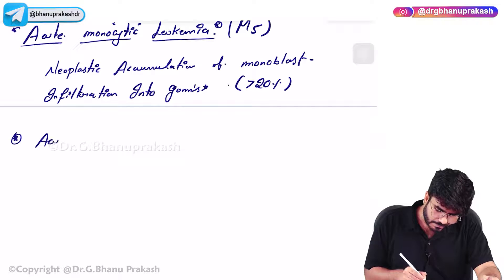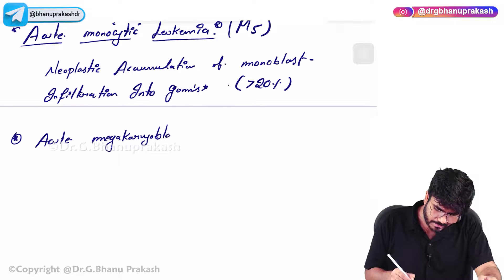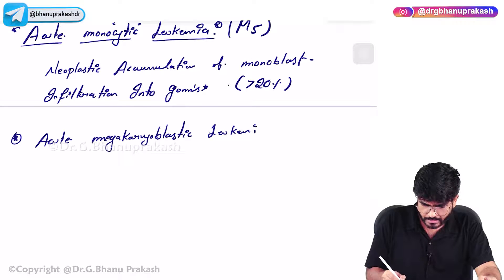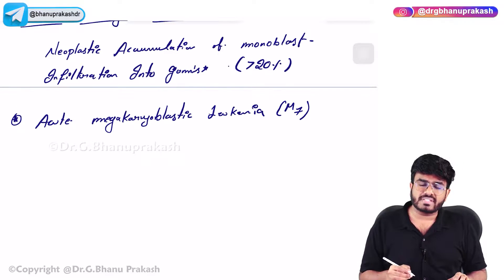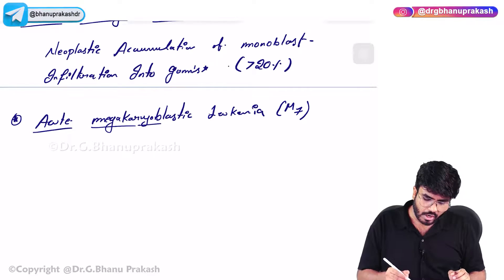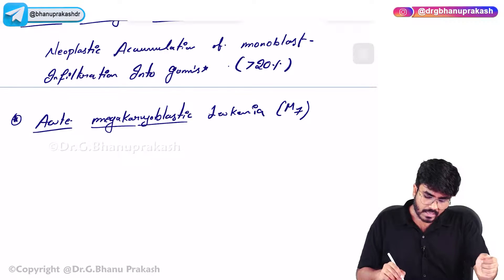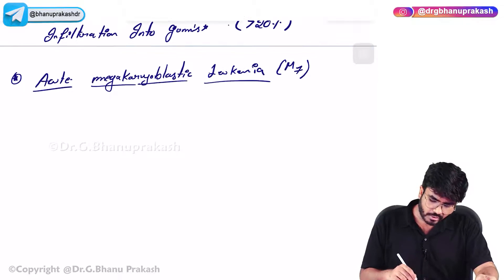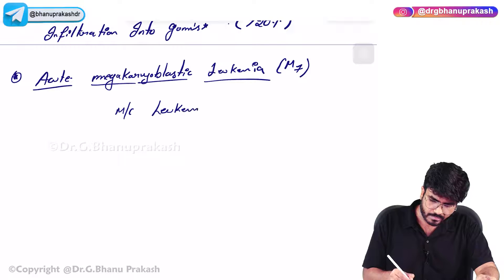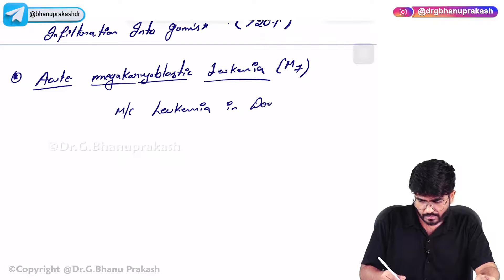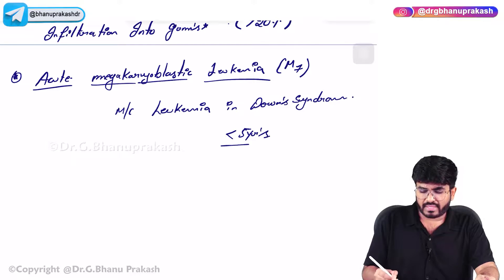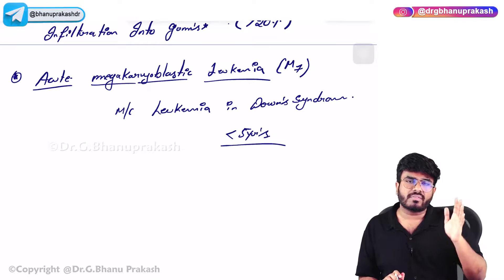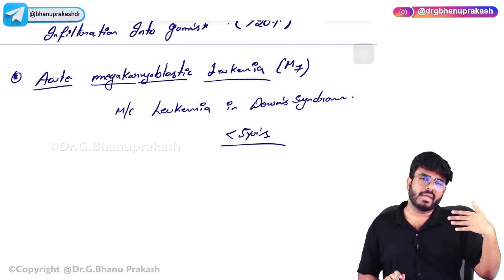The next type of AML is acute megakaryoblastic leukemia, coming under M7 type of AML. In the name itself - neoplastic accumulation of megakaryoblasts within the bone marrow more than 20%. An important point: acute megakaryoblastic leukemia is the most common leukemia in patients of Down syndrome before the age of 5.